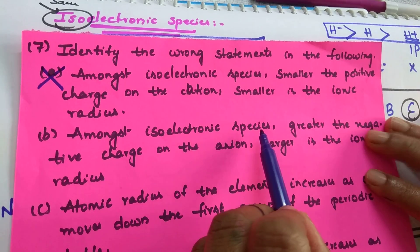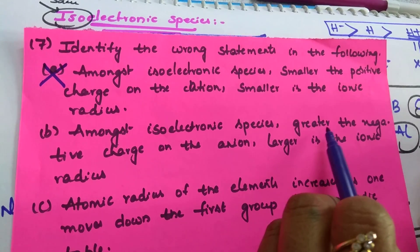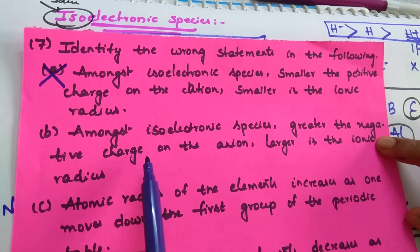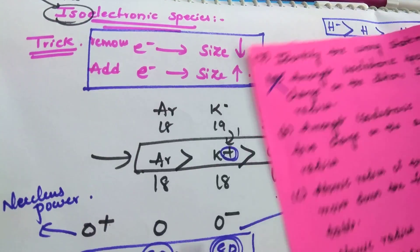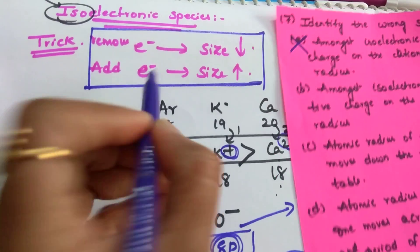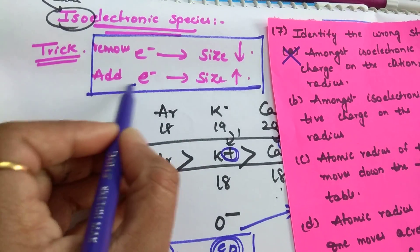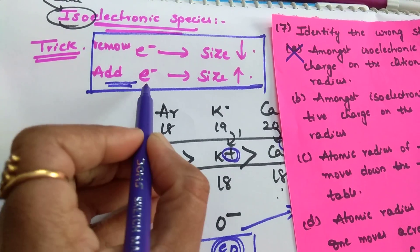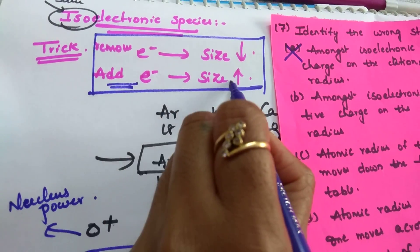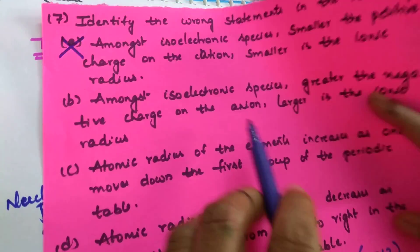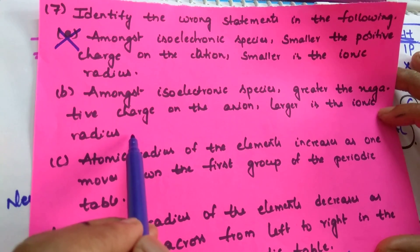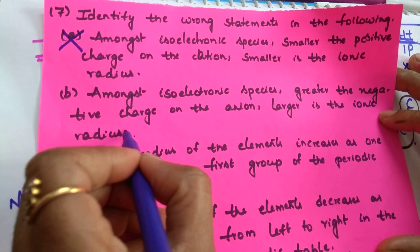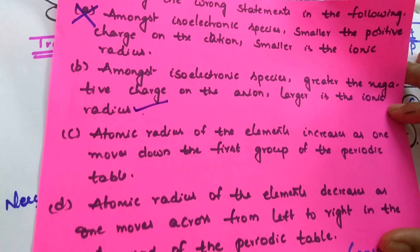Amongst isoelectronic species, greater the negative charge on the anion — then what happens? More is the negative charge means more electrons you added, then obviously size increases. Larger is the ionic radius. So this is a correct statement.